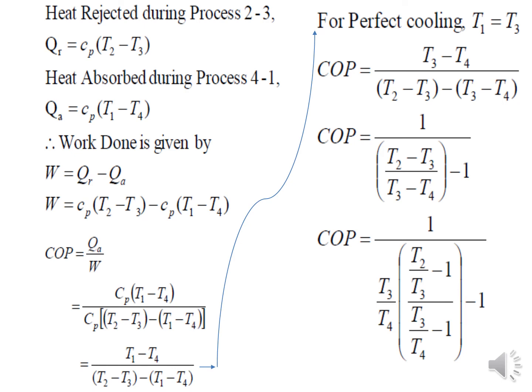Heat rejected during 2 to 3, you see in the TS diagram: CP constant pressure, 2 to 3 is constant pressure, so CP into T2 minus T3, assuming 1 kg. QA equals CP into T1 minus T4. Work done is QR minus QA. Remember, QA minus QR is in heat engine, QR minus QA is in refrigerator. COP is heat absorbed divided by total work done. CP gets cancelled and in terms of temperature only.